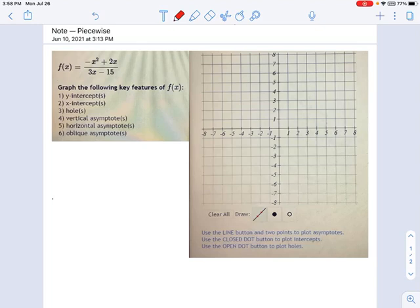Let's graph a rational function, and in this case, it's negative x squared plus 2x over 3x minus 15. We're not going to graph it in its fullness with all the swoopy lines, but we're going to get as close as we can with the computer.